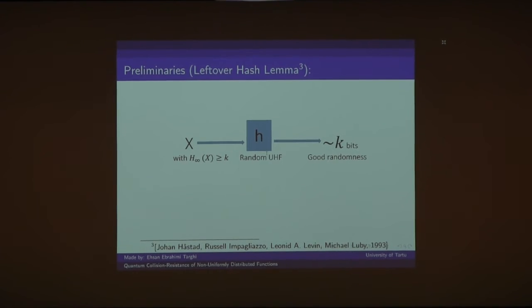And the next one is leftover hash lemma that says when X is a random variable with min-entropy K, so it's not uniform, by applying a random universal hash function, we will get approximately uniform bits. So we can extract from a non-uniform source uniform bits. So we also need this leftover hash lemma for our proof.